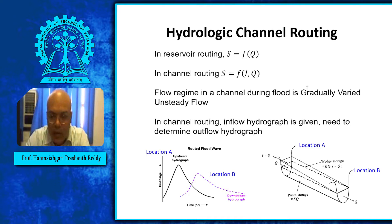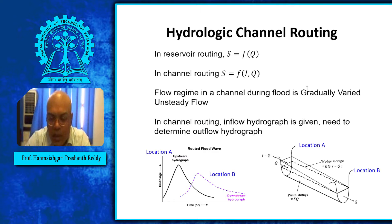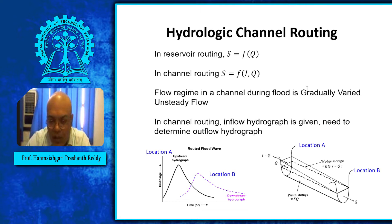In reservoir routing, given an upstream hydrograph, we construct the downstream hydrograph just downstream of the spillway. But in channel routing, there is no reservoir — a channel is given with a reach length of a few kilometers or a few hundred meters. The upstream hydrograph at the inlet of the channel is given, and we construct the hydrograph at the downstream end of the channel.